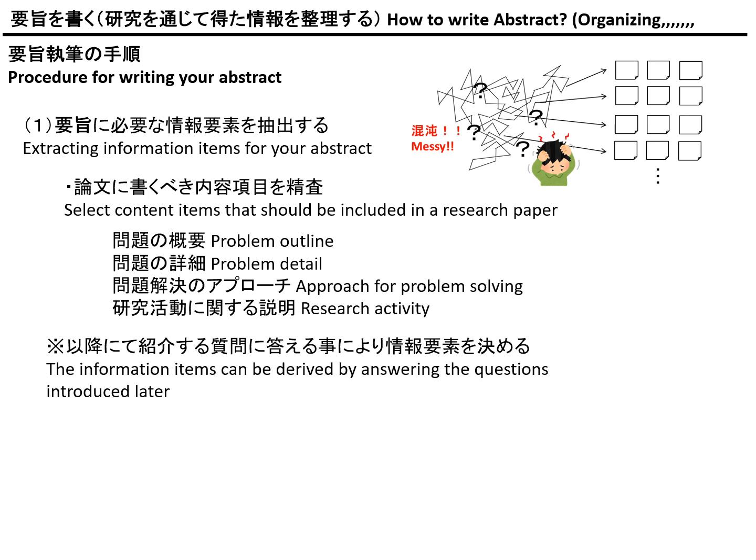I'm going to explain a detailed procedure for writing an abstract. What you should do when writing an abstract is not just start writing, but you need to extract information items — the important essence of information which you have obtained through your research activity.